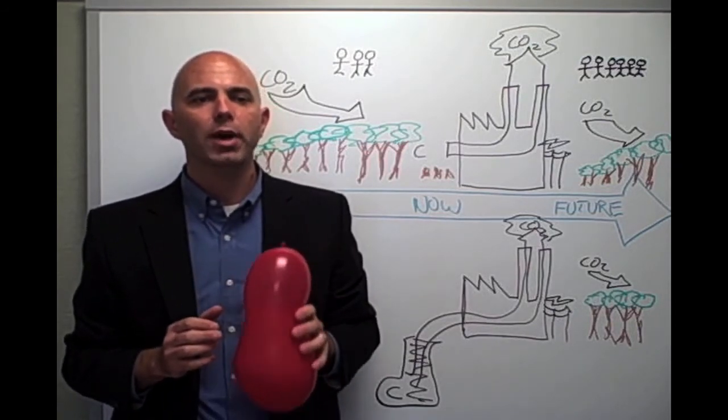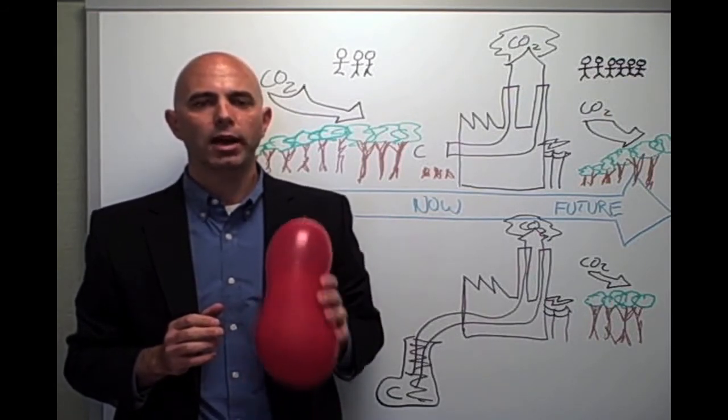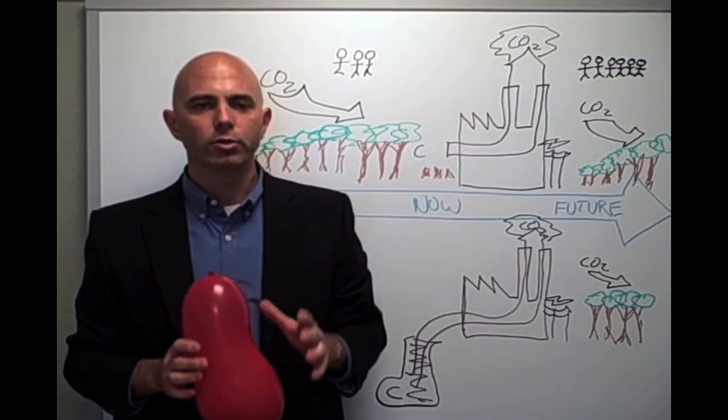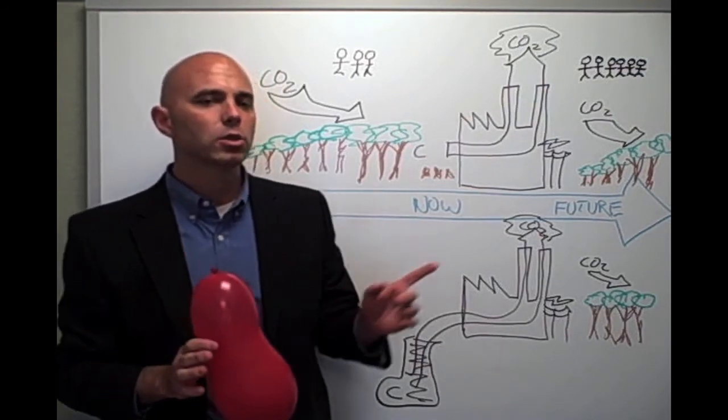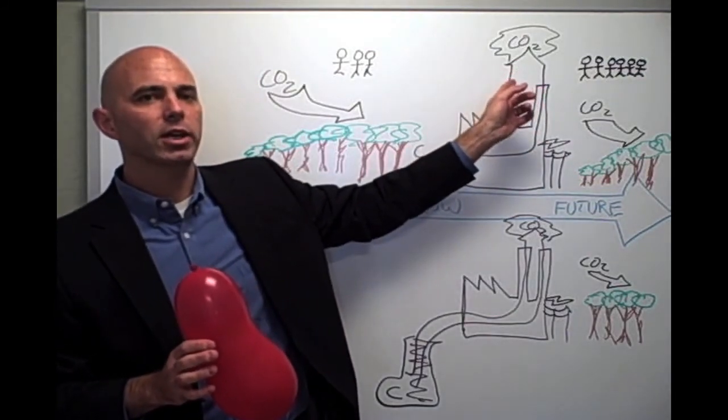And unfortunately, the clean energy bill that passed by the House earlier this year makes the same accounting error. Now it's in the hands of the Senate to fix it. Here's what they can do. Reward bioenergy made from biomass that is absorbing more carbon than is being emitted to smokestacks and tailpipes.